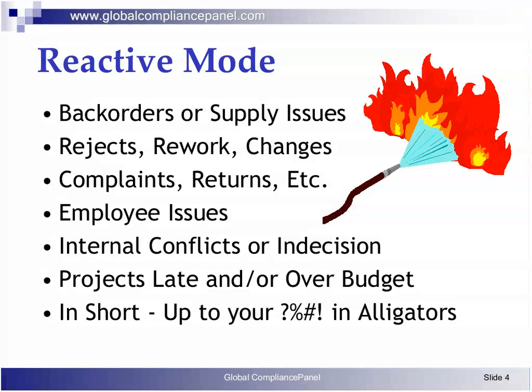Employee issues like performance problems, absenteeism, and turnover are only symptoms of current hiring practices, training, and our motivation, reward, and personal development practices. Again, these things are all downstream symptoms of some upstream event or decision.